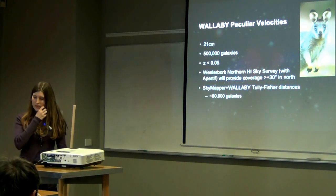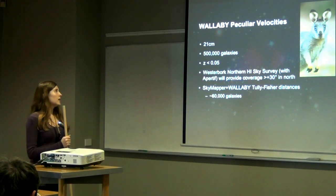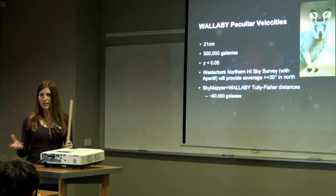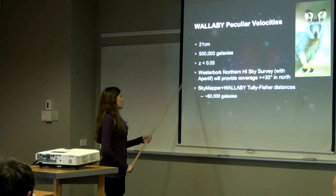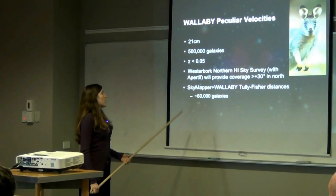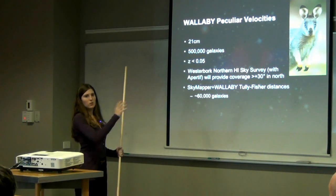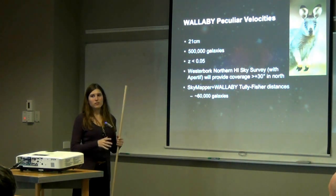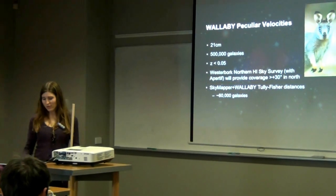Another survey you've probably all heard of is Wallaby. Wallaby is going to be observing galaxies in radio, which lets you measure the Tully-Fisher relation. Wallaby is measuring about 500,000 galaxies in total, and we'll be combining with photometry from SkyMapper to measure Tully-Fisher distances for about 60,000 galaxies. Hopefully it will also be combined with the Westerbork Northern H1 sky survey, giving us northern hemisphere coverage as well. This should give us an all-sky survey of homogeneously selected galaxies — a really nice survey for peculiar velocity measurements including bulk flow measurements.